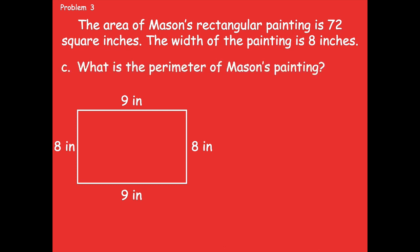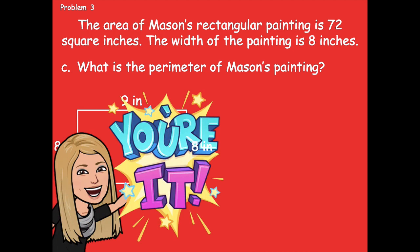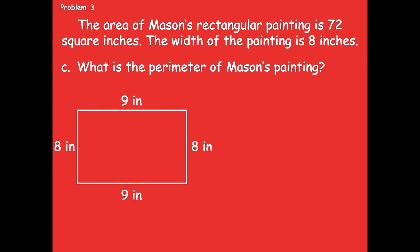Let's look at part C. It says what is the perimeter of Mason's painting? Pause the video and find the perimeter of Mason's painting. You know all of the side lengths now, so this part should be a piece of cake. Find the perimeter, and then click play when you're ready to go over it together. All right, friends, make sure to pause if you need more time.